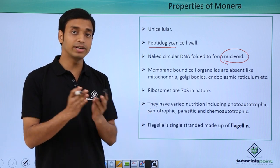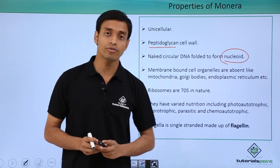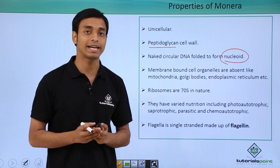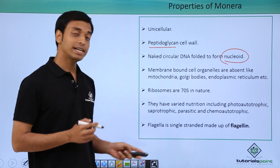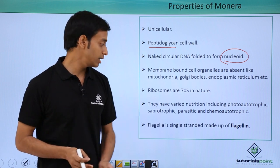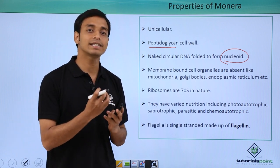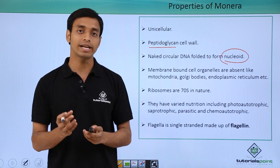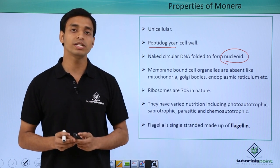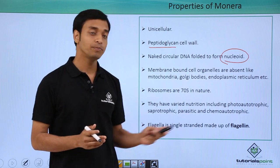Bacteria have varied modes of nutrition. They can be photo-autotrophic, meaning they synthesize their own food with the help of light, similar to plants. They can be saprotrophic, meaning they depend on dead organic matter for nutrition. They can also be parasitic, living inside or outside a host organism to extract nutrients. Additionally, they can be chemo-autotrophic, making their food using various chemicals instead of light.